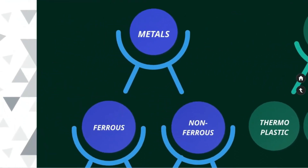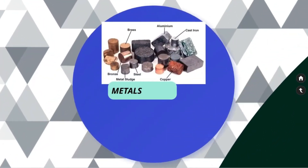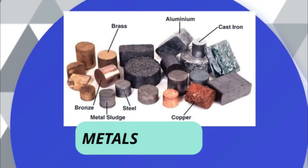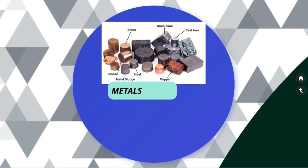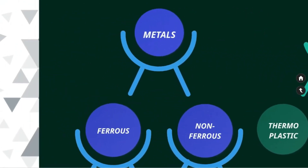Metals are subdivided into ferrous and non-ferrous metals, both in pure metal form and alloy form. Metals are the most commonly used class of engineering material. Metal alloys are especially common and are formed by combining a metal with another metal or non-metallic material. The combination usually occurs by a melting, mixing, and cooling process. Alloying is done to improve the properties of the base material. Metals are further classified into ferrous and non-ferrous metal.